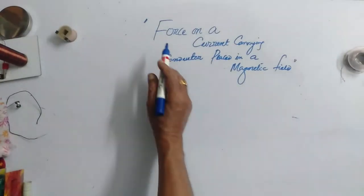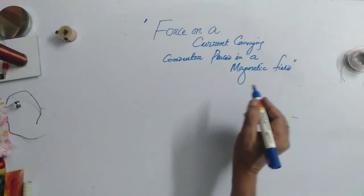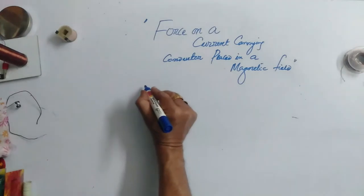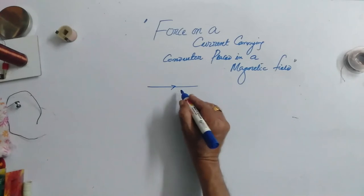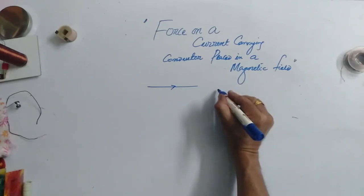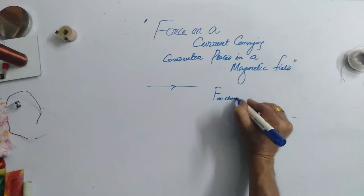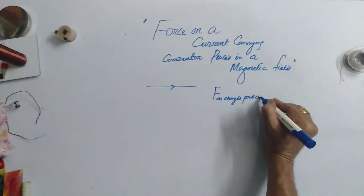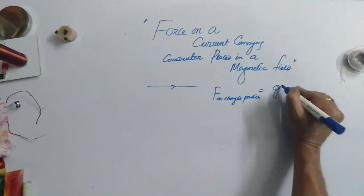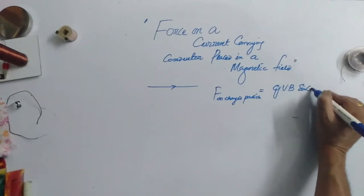Let's talk about the force on a current carrying conductor placed in a magnetic field. We know that from the Lorentz force, if a charged particle is projected in a magnetic field, it experiences force. This force is equal to QVB sin theta. So force on charged particle is equal to Q times VB sin theta.